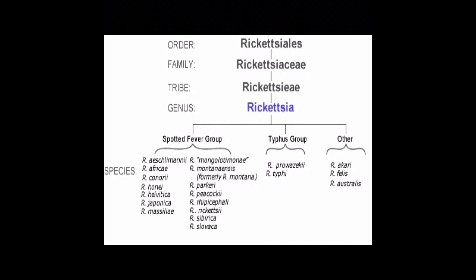Rickettsia belongs to the order Rickettsiales, the family Rickettsiaceae, the tribe Rickettsieae, and the genus Rickettsia. There are three main groups of species that are pathogenic to humans: species that cause spotted fever, species that cause typhus, and other species that are significant to human infection.